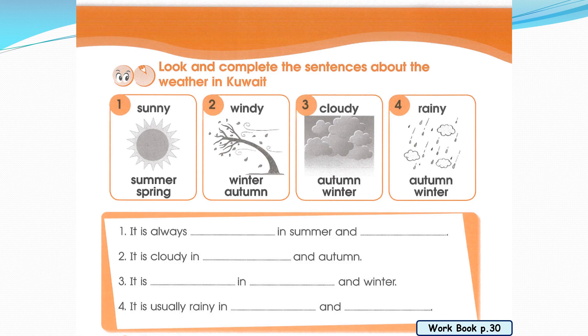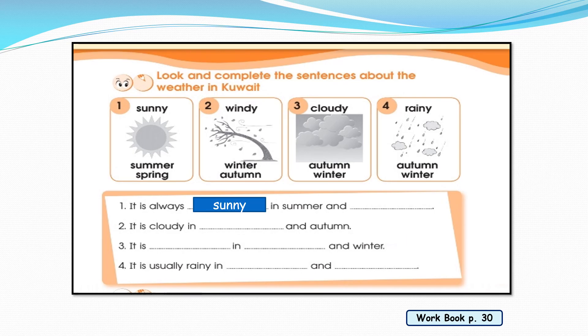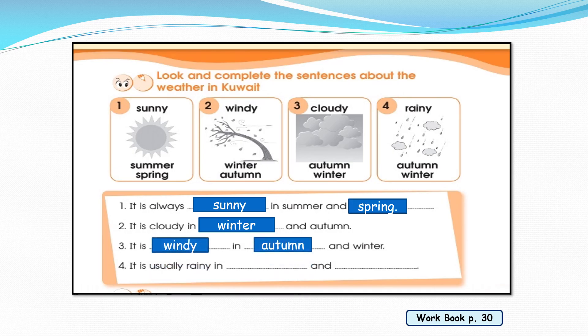Number one: it's always sunny in summer and spring — very good. Number two: it's cloudy in winter and autumn. Number three: it's windy in autumn and winter.